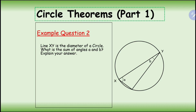Example two: line XY is the diameter of a circle. What is the sum of angles a and b? We know this angle is 90 degrees, so the sum of angles a and b should also be 90 degrees, because 90 plus 90 equals 180, and angles in a triangle equal 180 degrees.